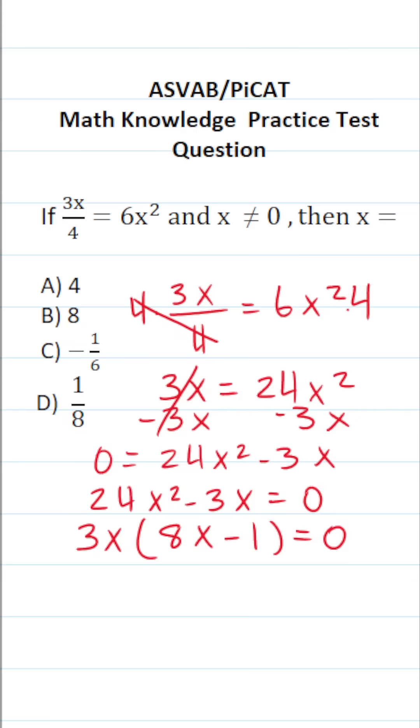All right. So now that we've factored that, we can set each part of this equation equal to 0 independently and solve it accordingly. And that means we're going to do this: 3x equals 0, 8x minus 1 equals 0.